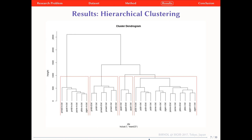Here we see the results from the hierarchical clustering. Again, we see that PLOS Pathogens is in a separate sub-cluster, in the third red box. And we also see that PLOS Computational Biology is in a separate cluster, in the last red box, and this suggests that the citation contexts in this journal are quite different from those in the other journals.